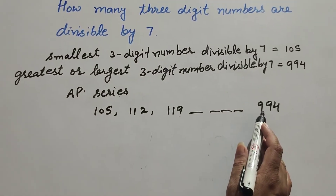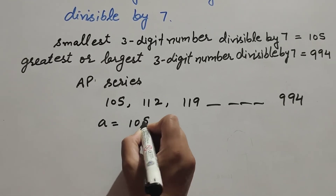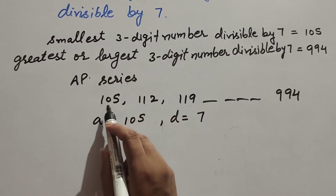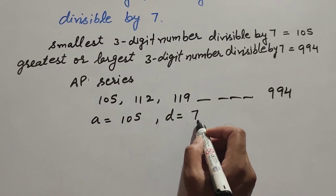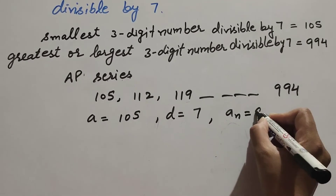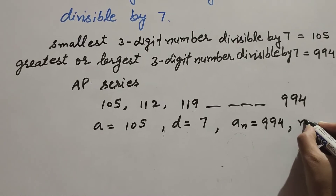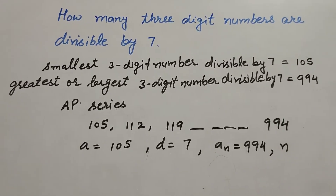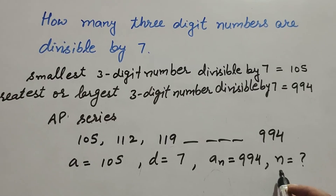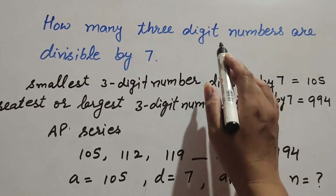This is an AP series because the common difference is equal to seven. The first term a is equal to 105, d is equal to seven (second term minus first term equals seven), the last term (nth term) is 994, and n is the total number of three-digit numbers divisible by seven, which we need to find.